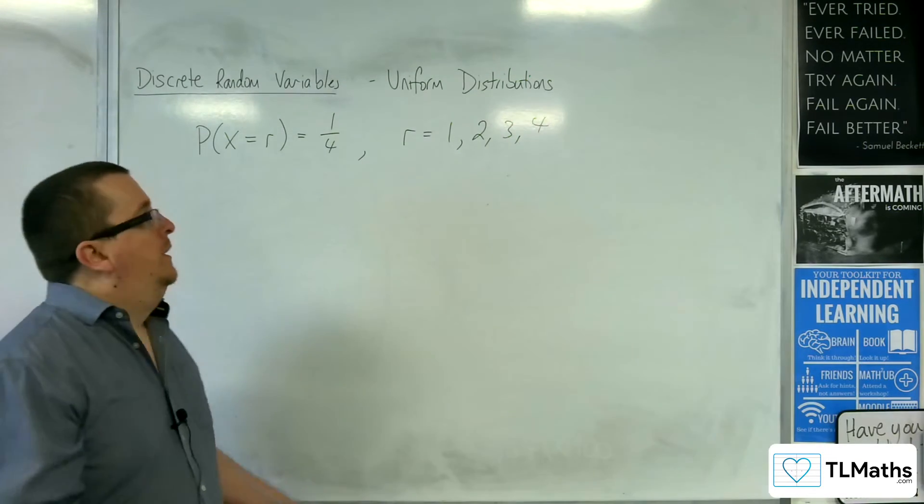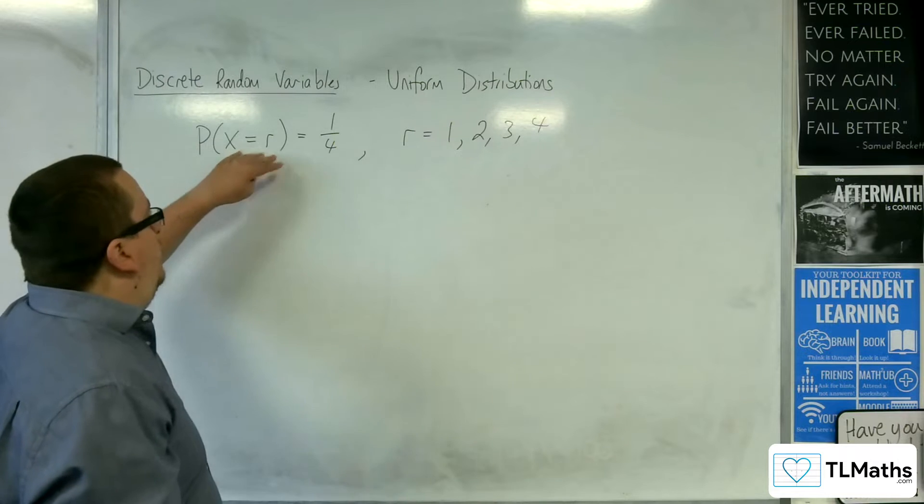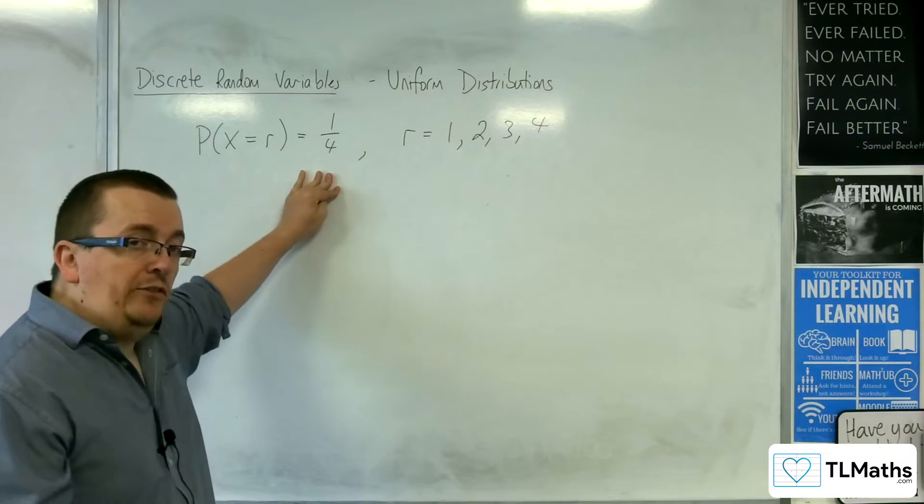What this is saying is that if X is one, two, three, or four, the probability is a quarter.